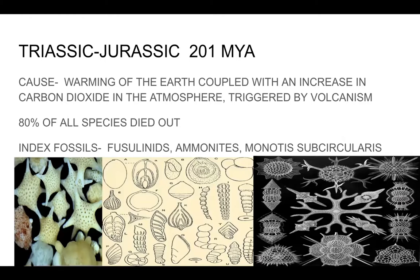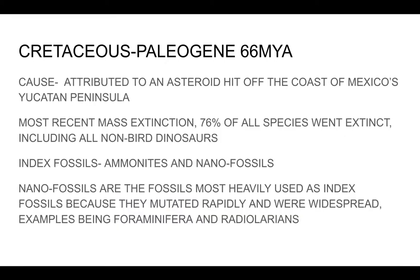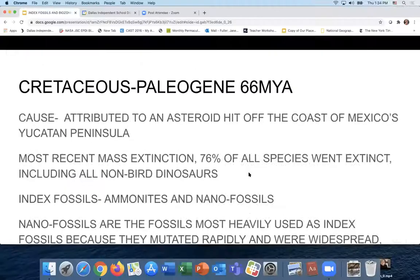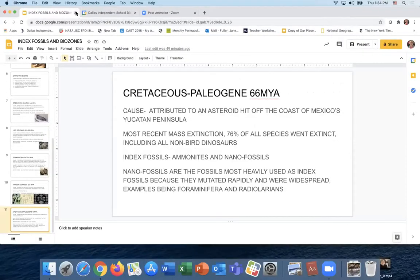The Triassic-Jurassic extinction involved a warming of the earth and 80% of all species died out. Then the Cretaceous-Paleogene extinction occurred when an asteroid hit the coast of Yucatán and 76% of all species went extinct, including the non-avian dinosaurs. Index fossils include ammonites and nanofossils — nanofossils like foraminifera and radiolarians are the most heavily used as index fossils because they mutated rapidly and were widespread.